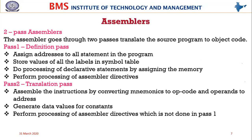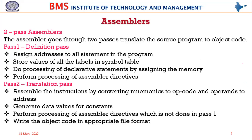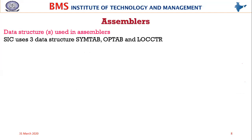You should be fluent in identifying the differences between SIC and SIC/XE programs. In SIC/XE programs, you should be able to identify format 2, format 3, and format 4 instructions and assemble accordingly. Before that, we shall look at the data structures used in assemblers — three structures: SYMTAB (symbol table), OPTAB (opcode table), and the location counter integer.